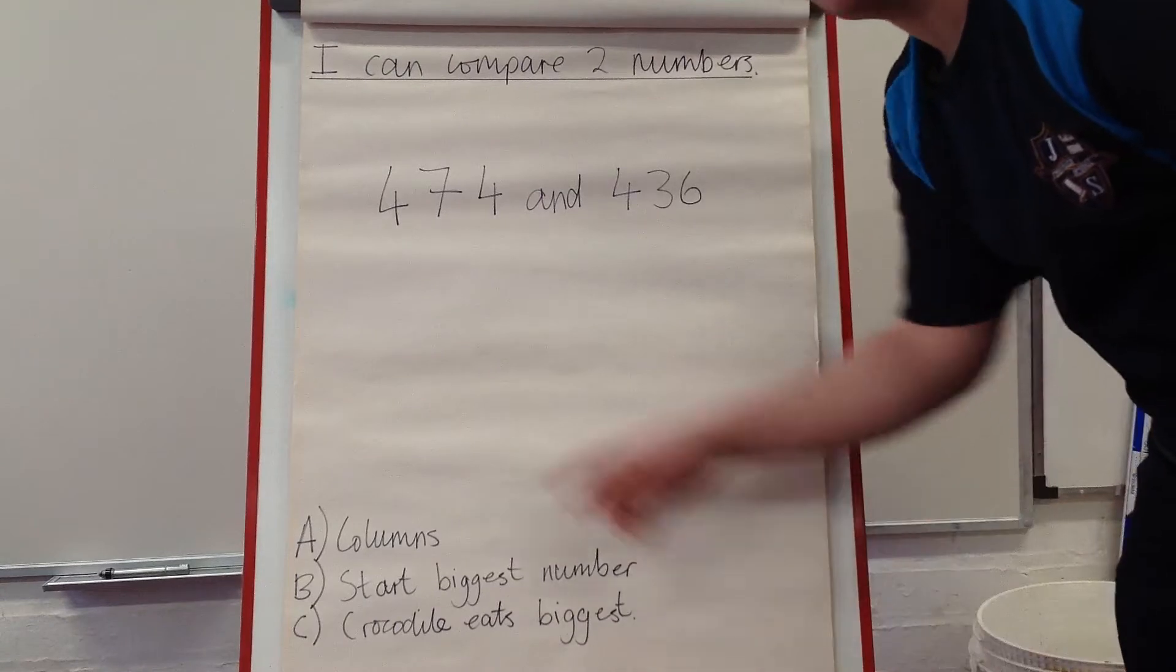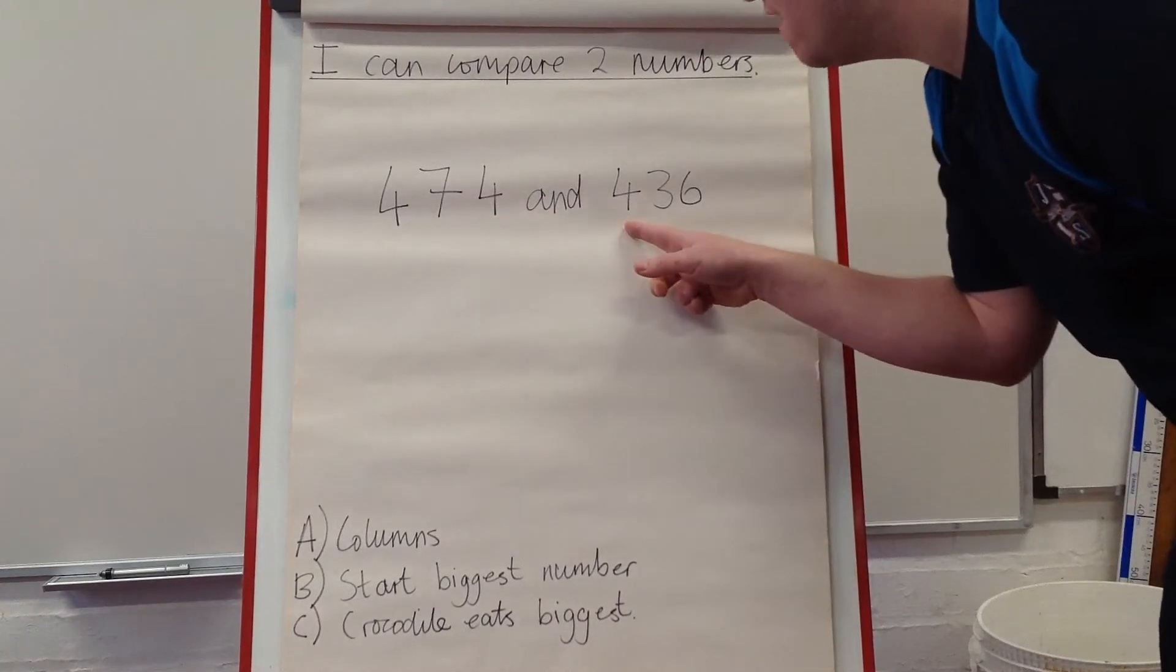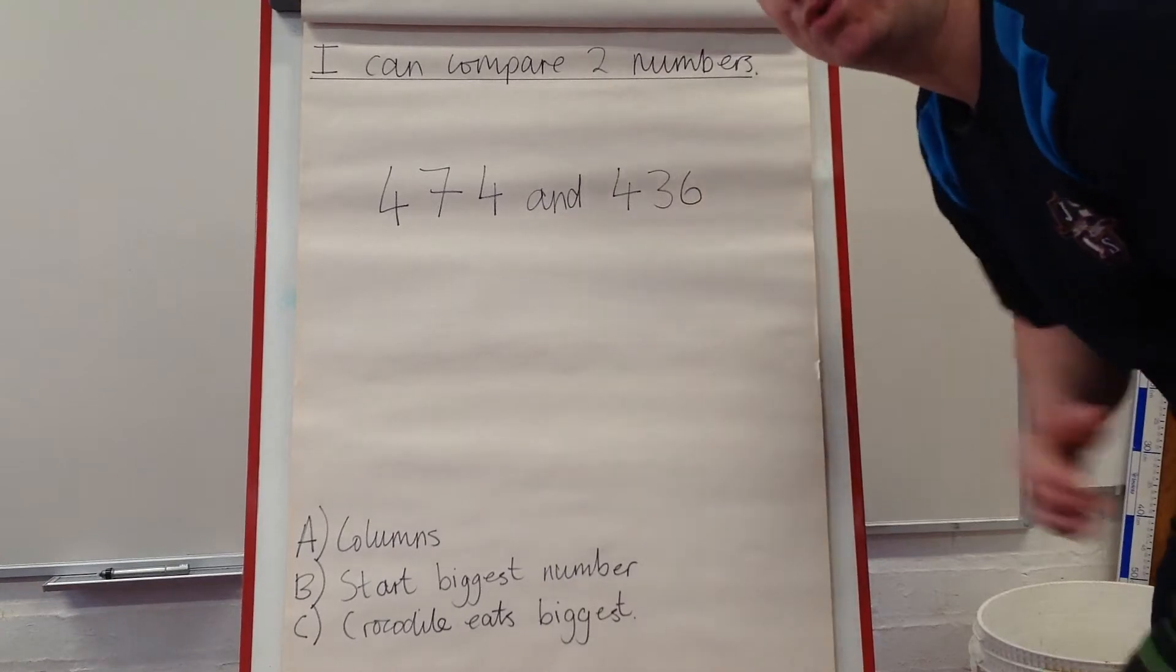Now, we're going to compare three digit numbers. Which one is bigger? 474 or 436?